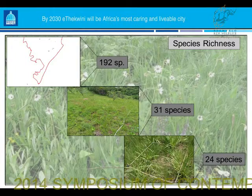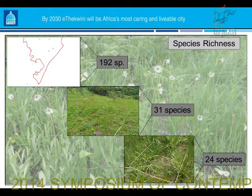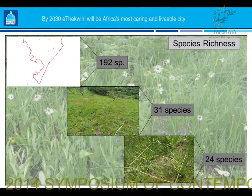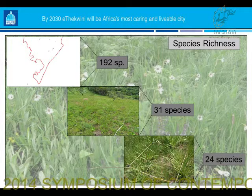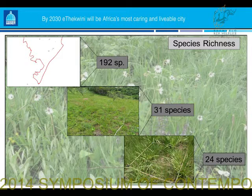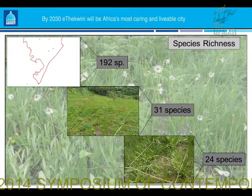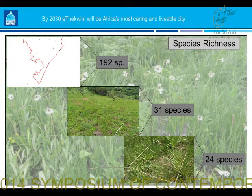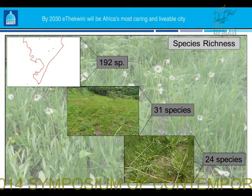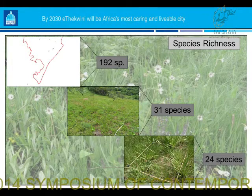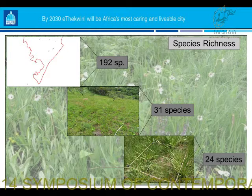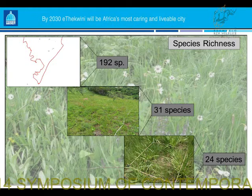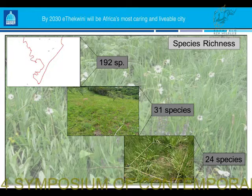Jumping straight into results: across all the reserves, including Vernon Crooks, we recorded 192 species of forbs — no grasses, just forbs. Focusing on eThekwini reserves, within a 100-square-metre plot the highest number recorded was 31 species. Very interestingly, in New Germany Nature Reserve we picked up 24 species in a single one-square-metre plot, which is quite rich. In the background you can see what these grasslands look like — a lot of small species sitting between grasses and gerberas that need to be recorded.